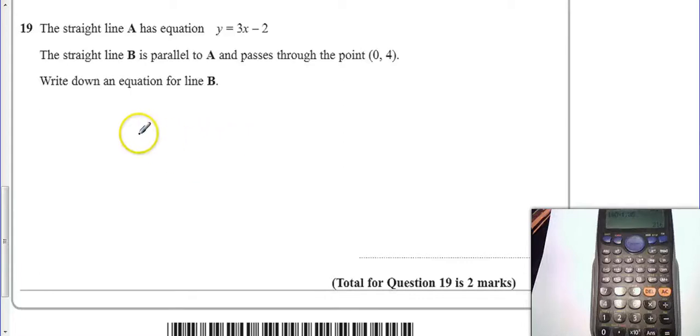Okay, so I know the equation of line A is y equals 3x minus 2. Now I know from this that the gradient is 3, not 3x. The gradient is 3, and I know that the y-intercept is equal to minus 2.